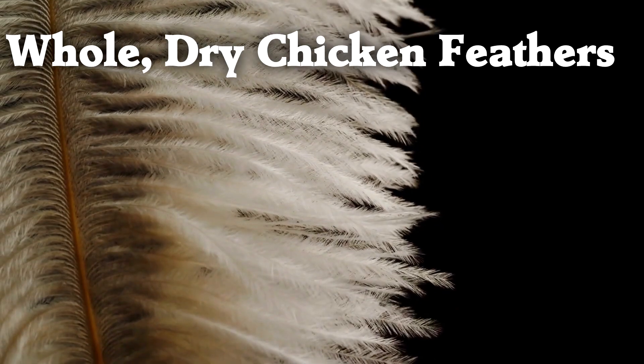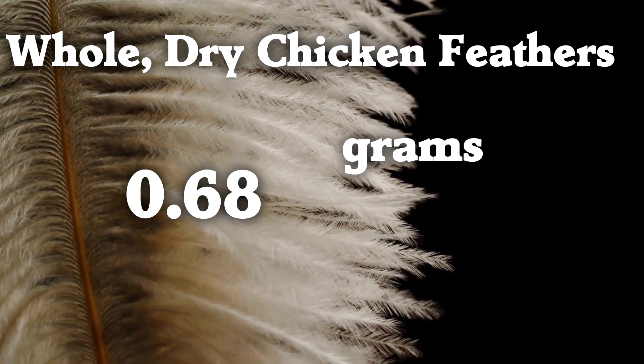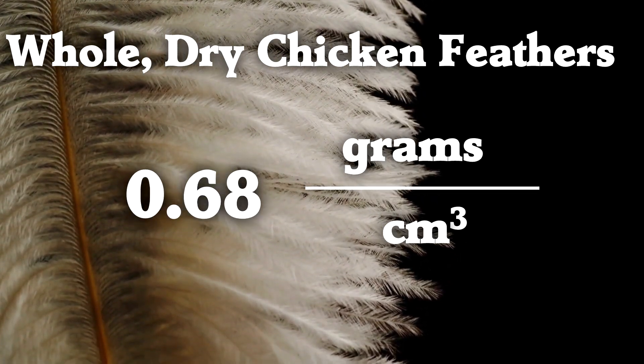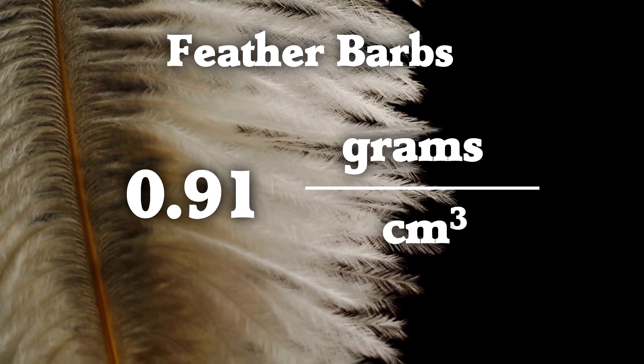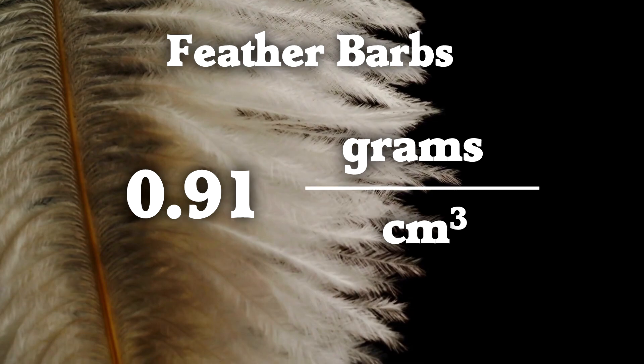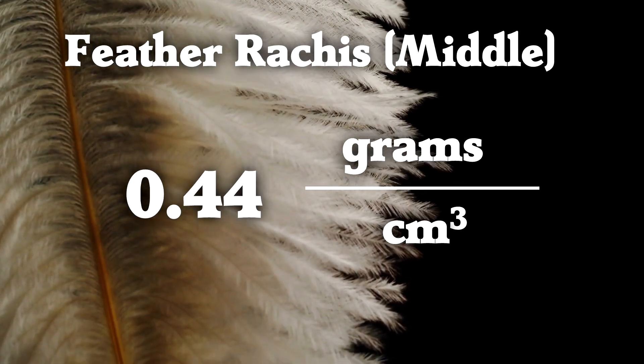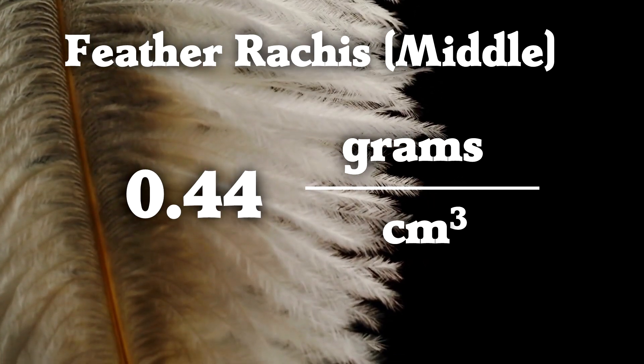Long story short, the density of whole, dry chicken feathers is 0.68 grams per centimeter cubed. The barbs alone are 0.91 grams per centimeter cubed. And the middle part is 0.44 grams per centimeter cubed. That's an average feather density.